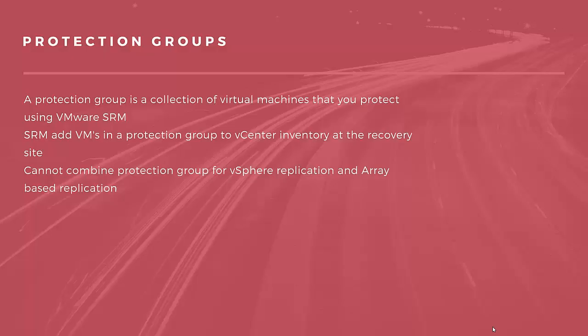In a protection group, you are going to group all your virtual machines that you want to protect. Once you create a protection group, virtual machines will be available in vCenter inventory at the recovery site. Note that you cannot combine a protection group for vSphere replication and array-based replication. Let's see how to create a protection group.